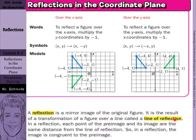In a reflection, the image is congruent to the pre-image. If we look at our x-axis and the point negative 2, 1 — when we're reflecting over the x-axis, notice how this point is 1 away, so the reflected point is also 1 away. For the point way up here, we count 1, 2, 3, 4 to get to the x-axis, so we count 1, 2, 3, 4 on the other side.